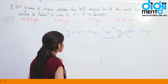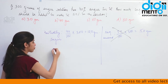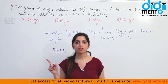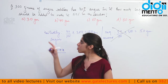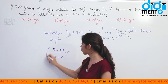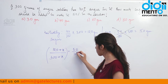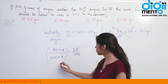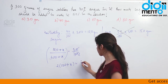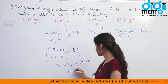So what do we do? Suppose you add x grams of sugar to the solution. Then the total amount of sugar becomes 120 plus x. But the solution also increases by x grams, so the total amount of solution becomes 300 plus x. Now this ratio should be equal to 50%, that is 1 by 2. So you just solve for x, and you get 2x minus x equals 300, giving x equals 60 grams.